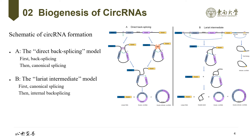Recent studies unveiled that circular RNAs are derived from numerous pre-mRNAs. Two mechanisms have been raised to explain the formation of circular RNAs, defined as direct back splicing and lariat intermediate. Both models involve back splicing and canonical splicing, but differ in which step happens first. In direct back splicing, the loop structure is formed by complementary sequences flanking long exons or RNA binding proteins. The intron sequences are removed or retained to generate exonic or exonic-intronic sequences respectively. In the lariat intermediate model, canonical splicing appears first, forming a lariat precursor, and then internal back splicing takes place, resulting in a double lariat molecule and a circular RNA.